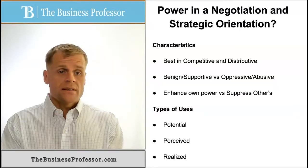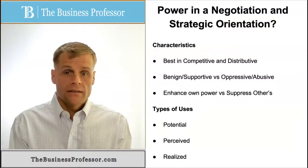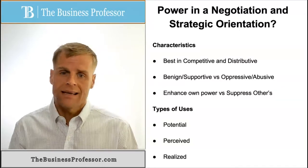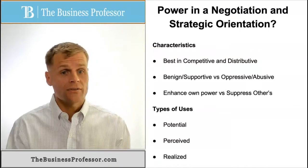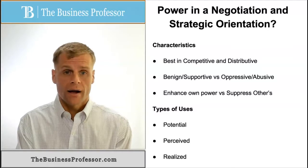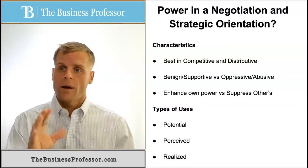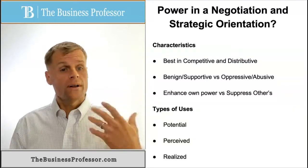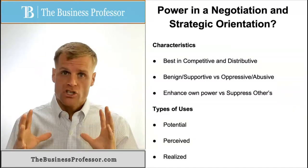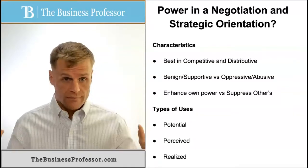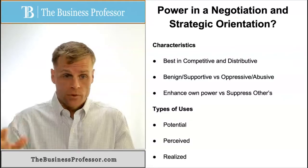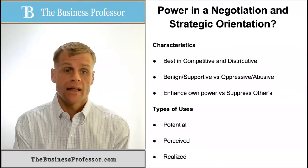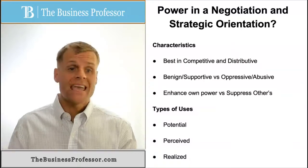Which brings us to the types of uses of power. Potential power is the power someone has the ability to exert — it can give you confidence in the negotiation, knowing you can pull that lever. Likewise, perceived power is the power the other person perceives you have, whether or not you actually have that potential power. That perception can be a strong influence upon them in the negotiation, including what power they perceive about themselves and what you perceive is present and how it can be utilized.